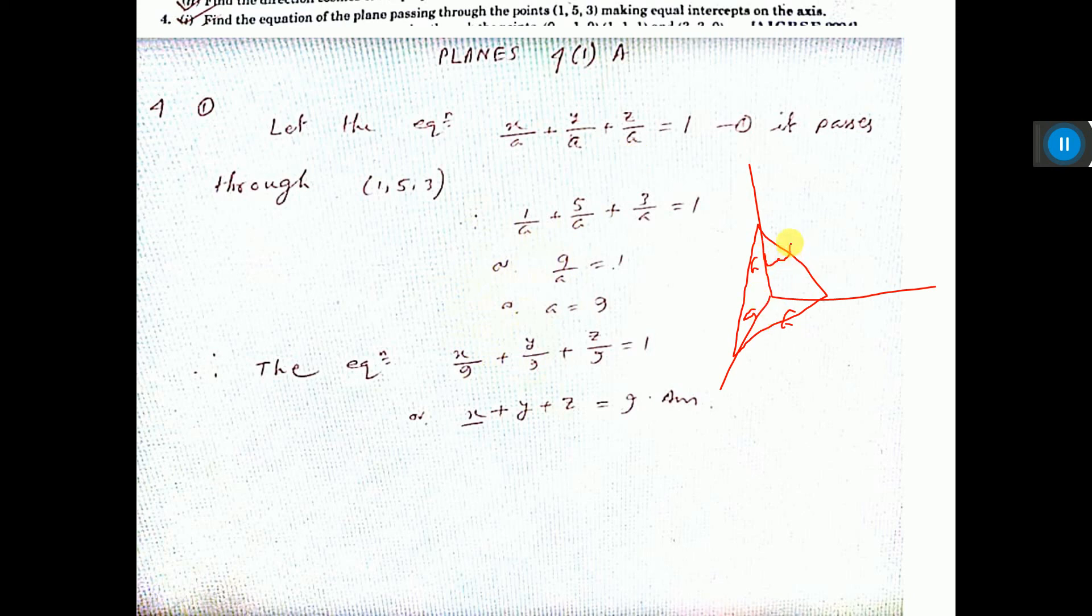Let all be a. Now the plane is passing through (1,5,3). So this is the value of x, this is the value of y, this is the value of z. Put these values here and get the value of a.